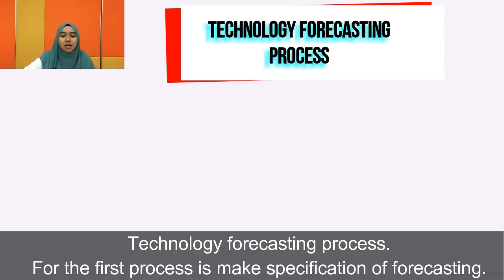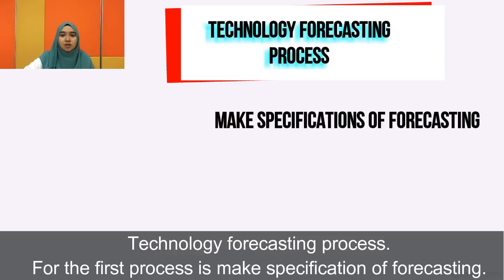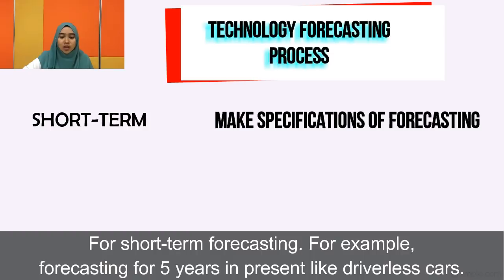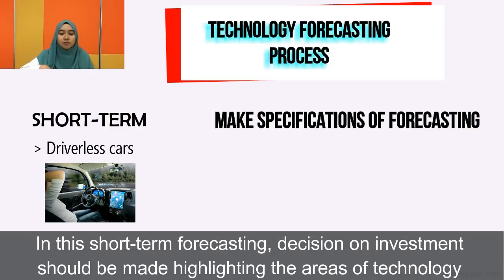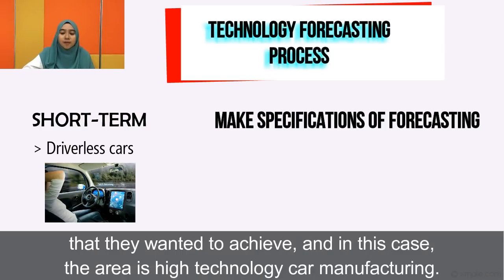For the technology forecasting process, the first step is making a specification of forecasting. For short-term forecasting — for example, forecasting for 5 years — a present example is driverless cars. In this short-term forecasting, decisions on investment should be made highlighting areas of technology to achieve, and in this case the area is high technology car manufacturing.